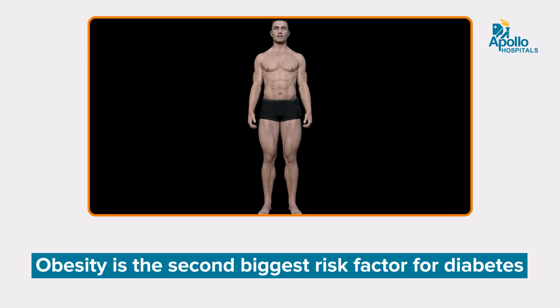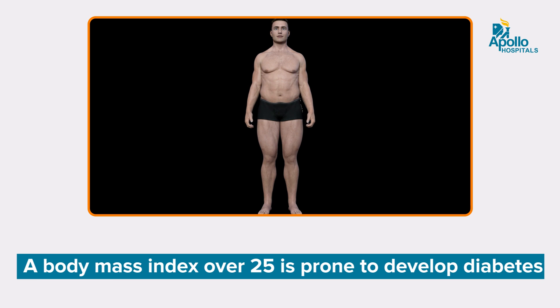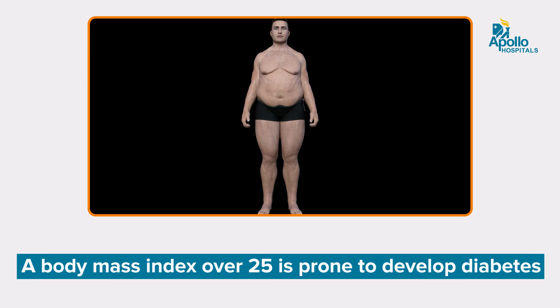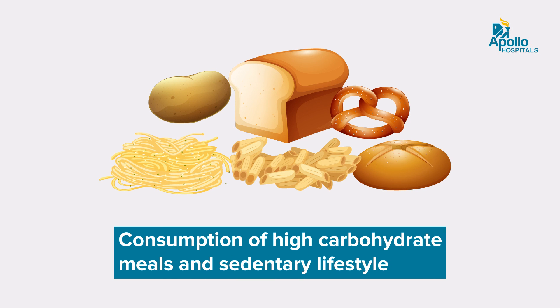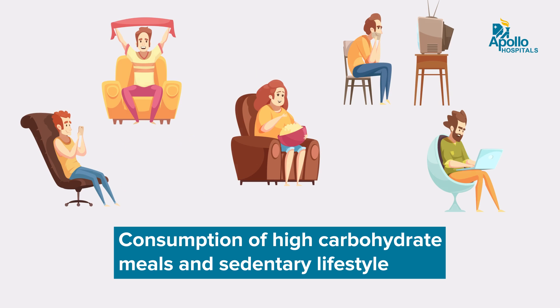The second biggest risk is obesity. If your body mass index is more than 25, then you are prone to develop insulin resistance, which ultimately leads to the development of diabetes. And third, the most important is consumption of high carbohydrate meals and leading a very sedentary lifestyle. So these are the important risk factors for the development of diabetes.